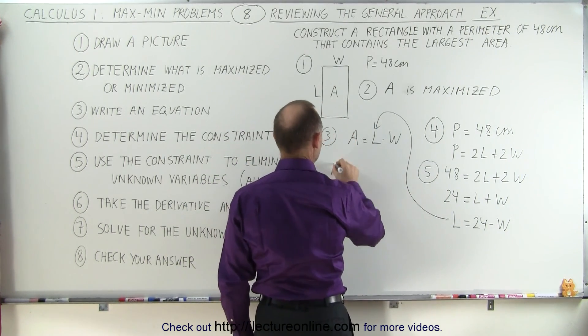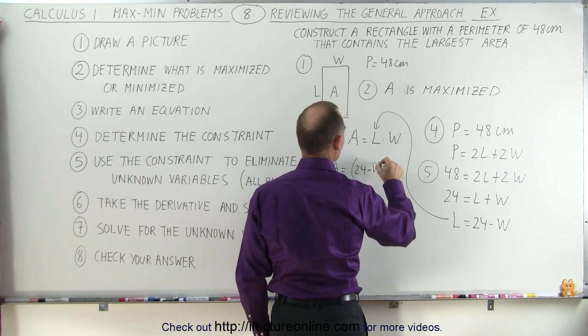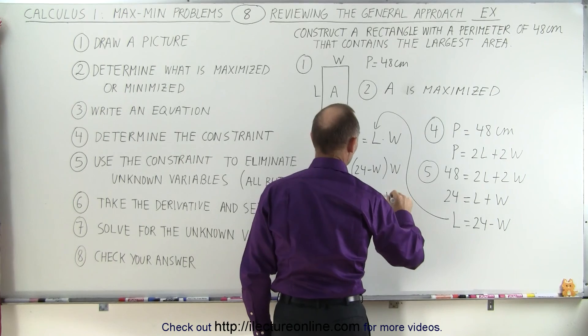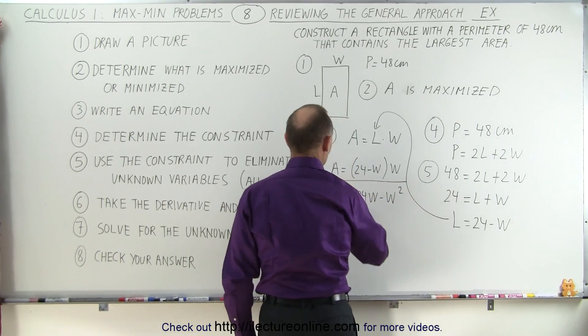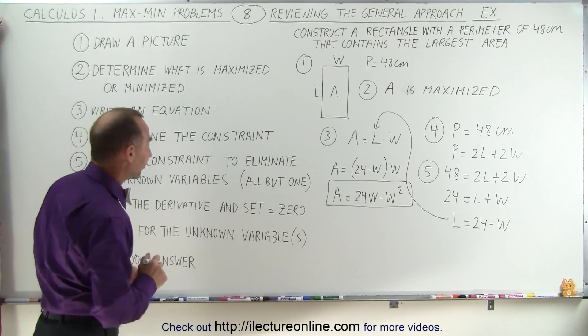We get A is equal to L. Instead of L we write 24 minus W times W, or A, the area, equals 24W minus W squared. So now we have the area as a function of just a single variable.